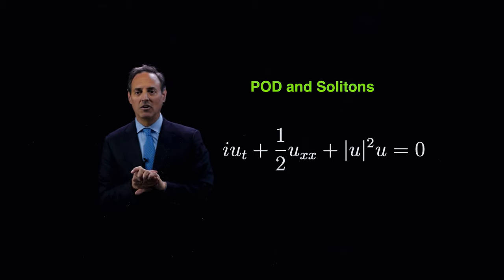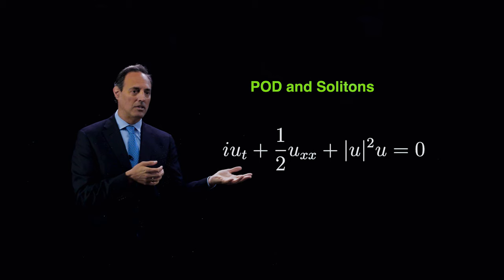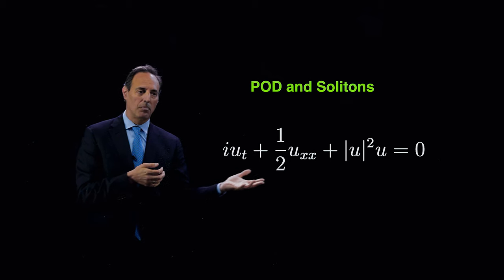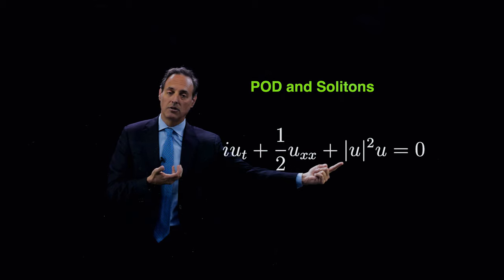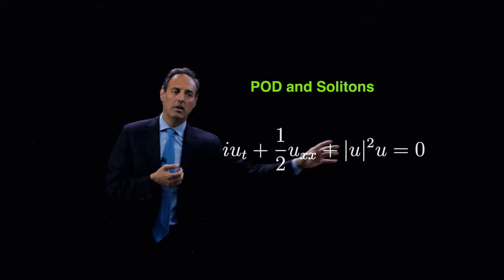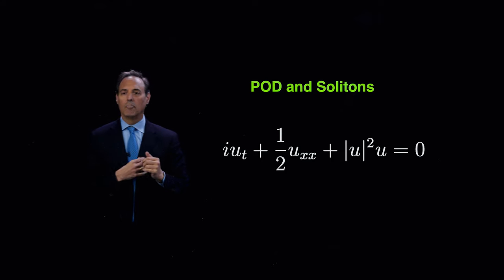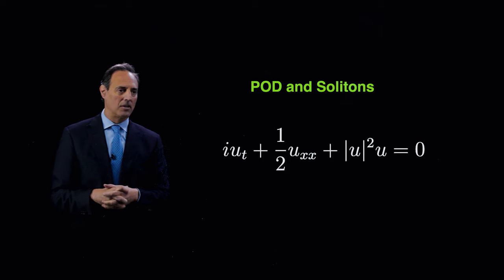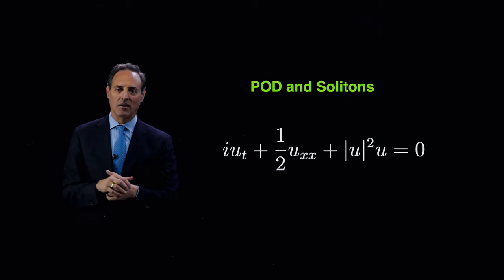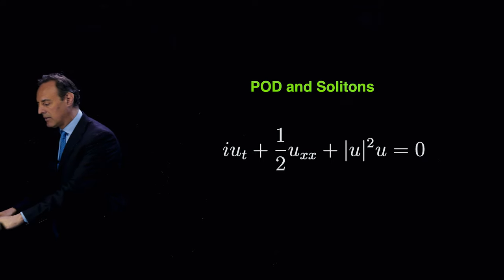I want to do a POD decomposition looking at soliton dynamics. Here's the model, the Schrödinger equation is the linear part, and now you have this nonlinearity here. So this is the nonlinear Schrödinger - linear part, nonlinear part. This has some very interesting dynamics, and we're going to look mostly at some of the canonical soliton dynamics that are quite interesting and well studied historically.